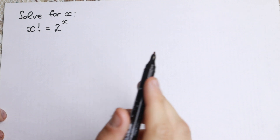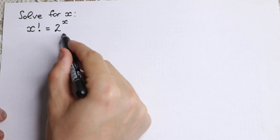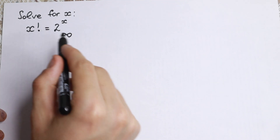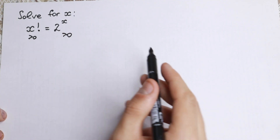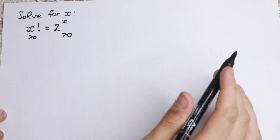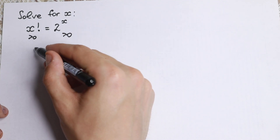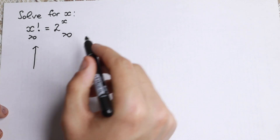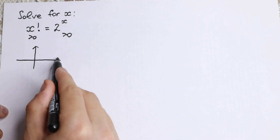First of all, I want to mention that 2 to the x is greater than 0, and x factorial is greater than 0 as well. Right now I want to show you a graph real quick.